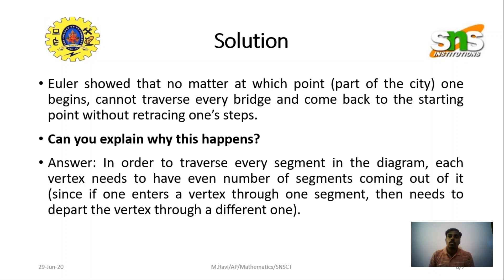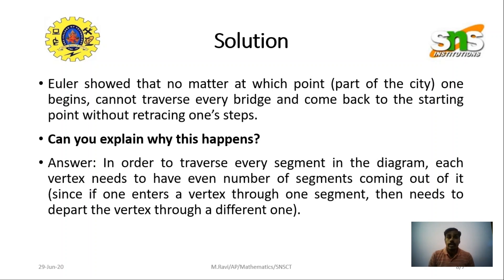Euler found that the solution to the Königsberg Bridge problem is not at all possible, which he proved using graph theory. Even if you cannot find the solution, you have to provide the appropriate steps explaining why the solution cannot be found. Hope you understand and enjoyed this lecture. Bye.